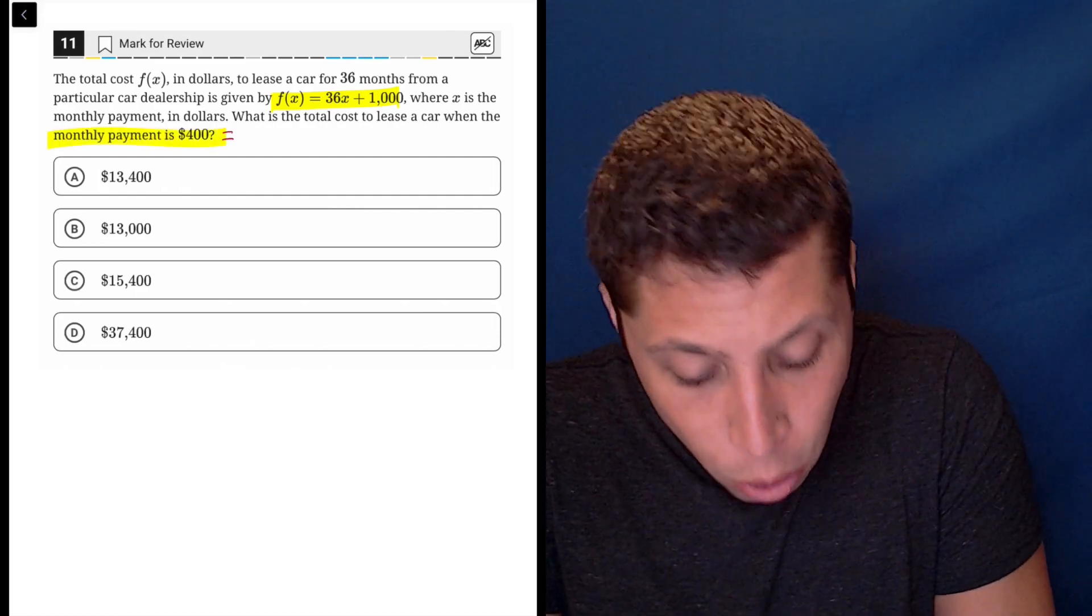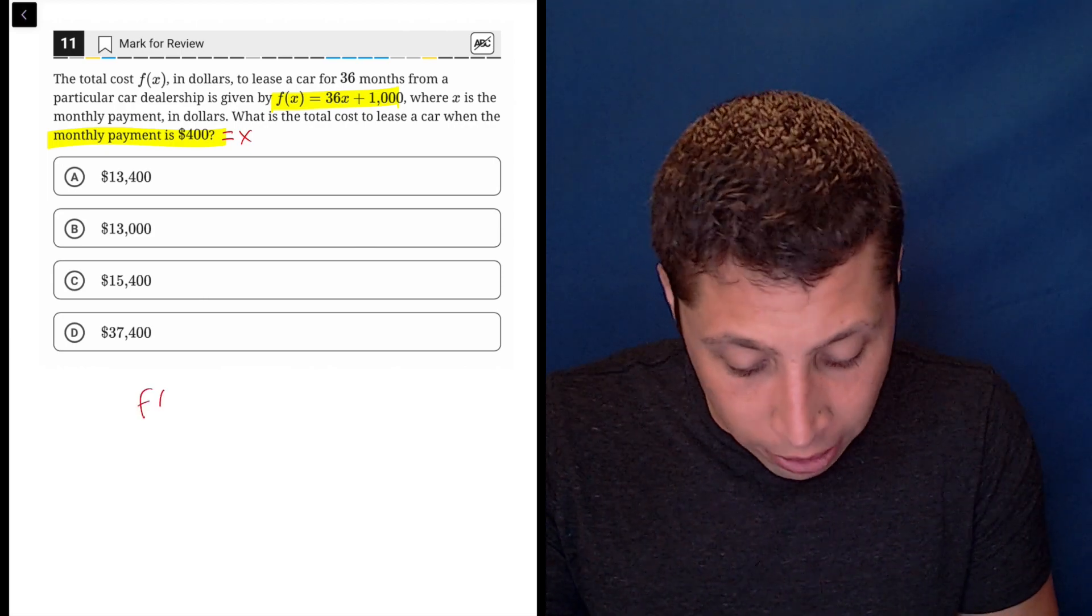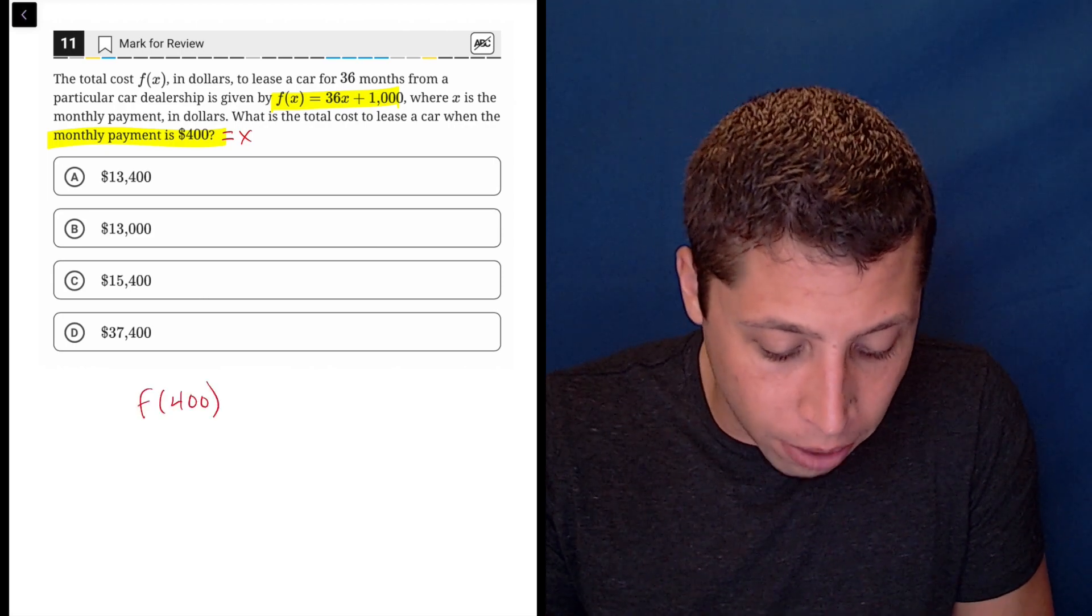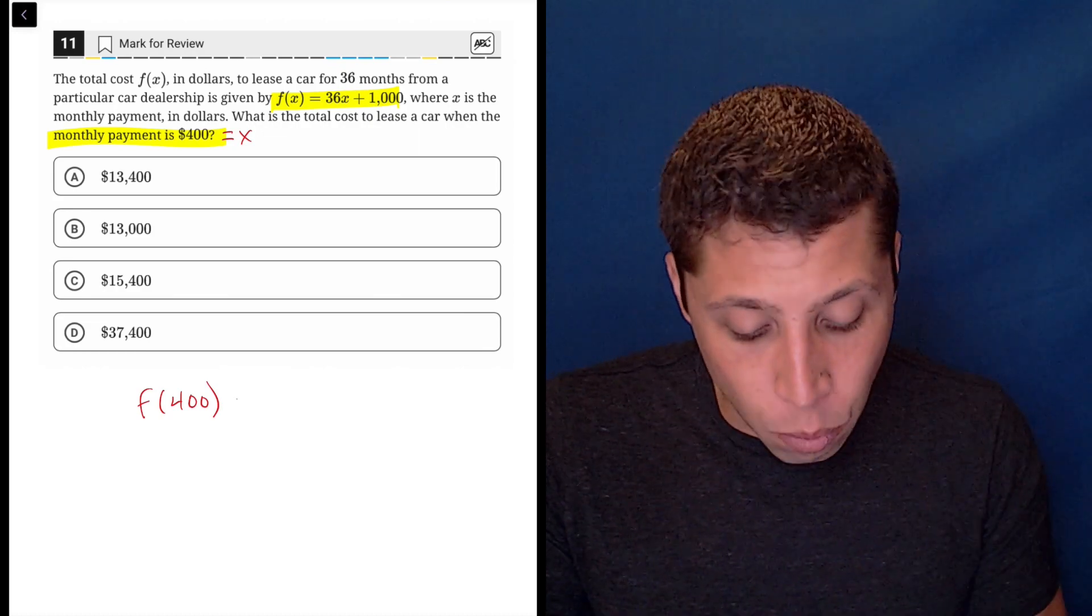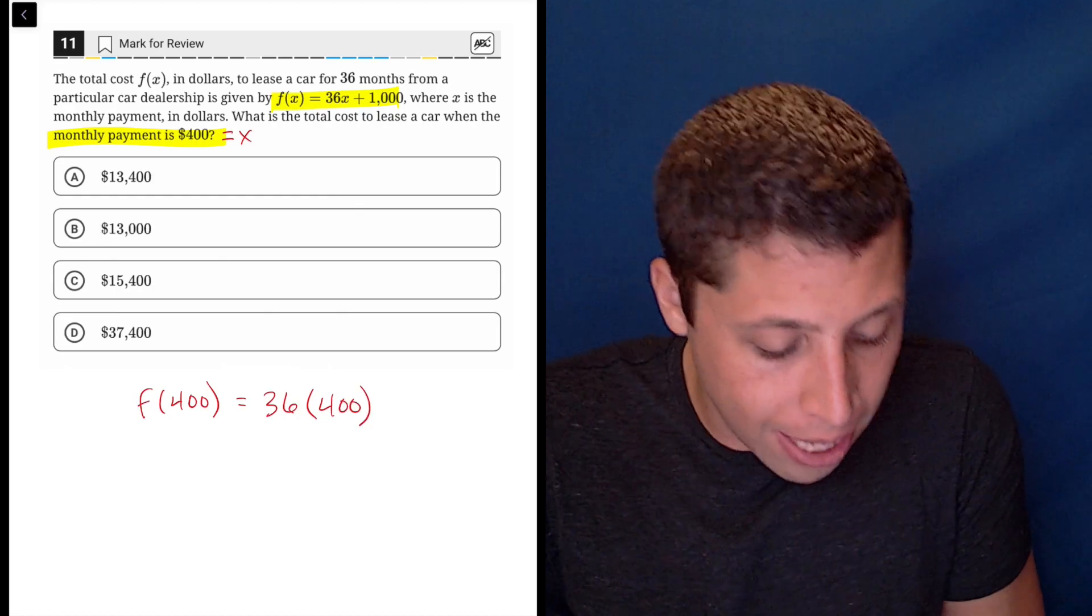So that last part is code telling us that X is 400. So what we're really doing here is finding F of 400, meaning what happens in our equation when we put 400 in for X?